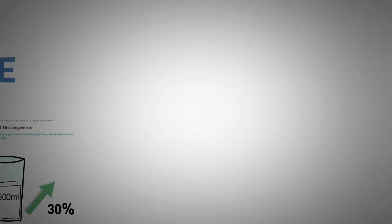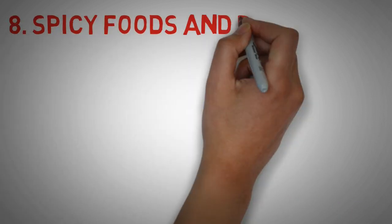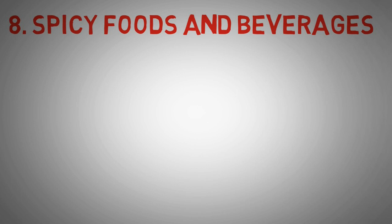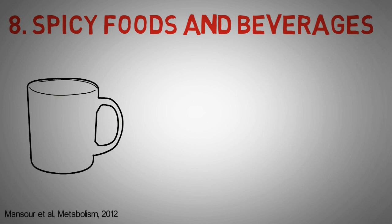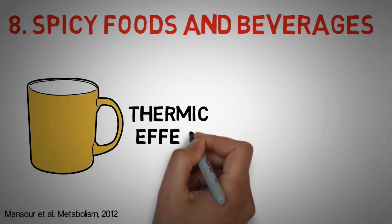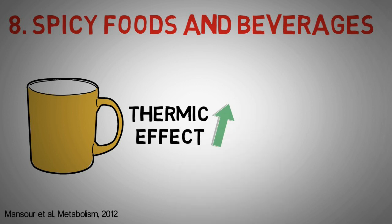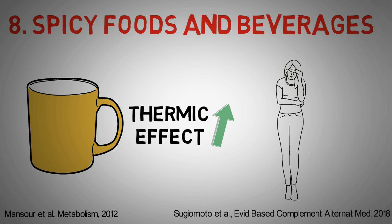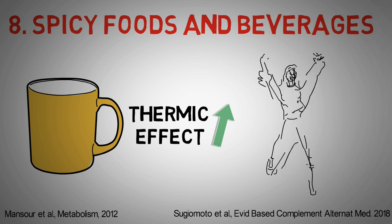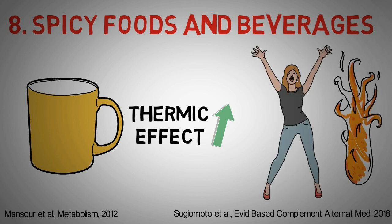But it can also work the other way around by a very similar mechanism. Something spicy can also boost your metabolism. A study found that drinking ginger tea increased the thermic effect of food compared to a placebo drink. And another study found that drinking ginger tea significantly increased the body temperature of women, which indicates that the body burns through more energy.